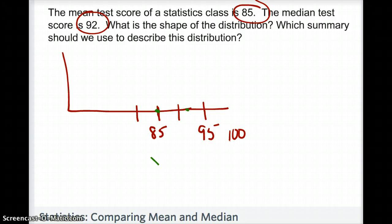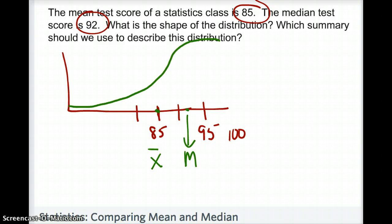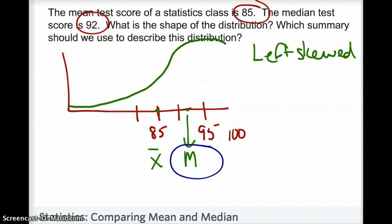Knowing that the mean (85) is closer to the tail, we would have a distribution that looks left skewed — which is what a teacher would love to see, meaning most students scored 85 to 100. The shape of this distribution is left skewed. Because it's skewed, the summary statistic to use is the median, so we would say the class center was 92.